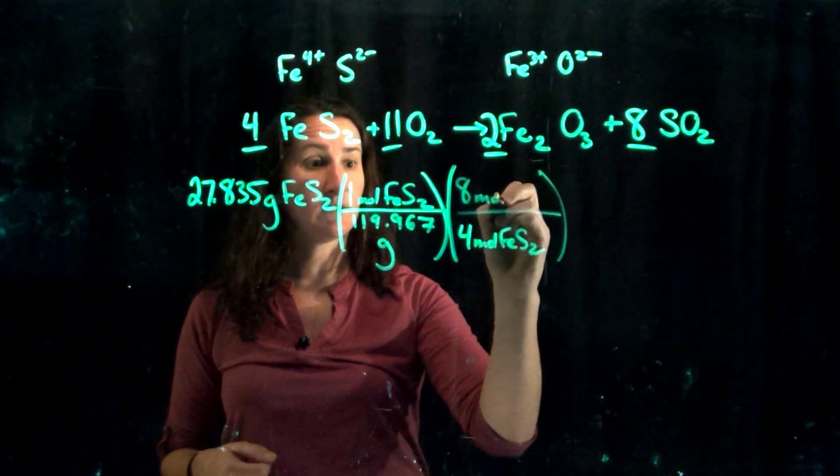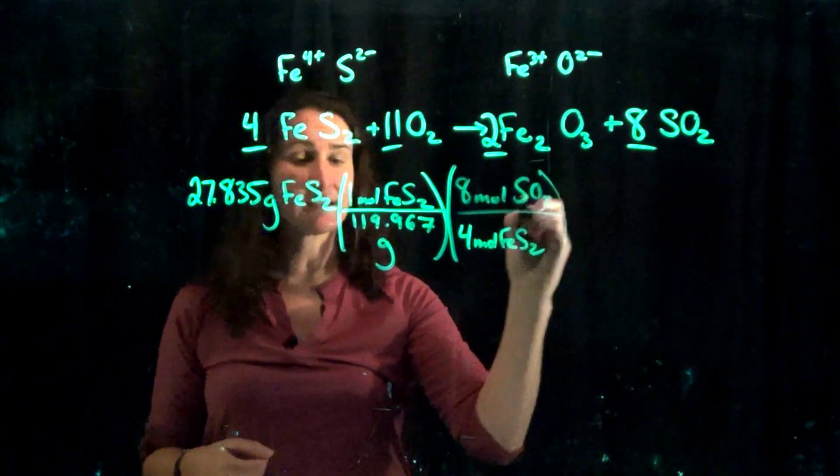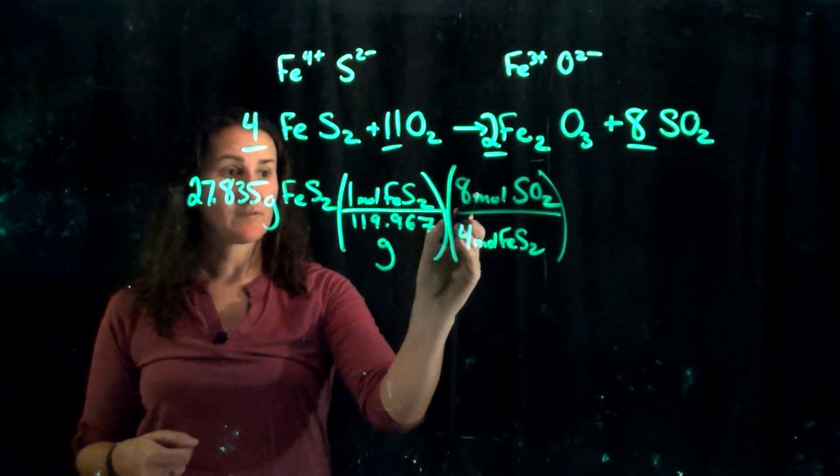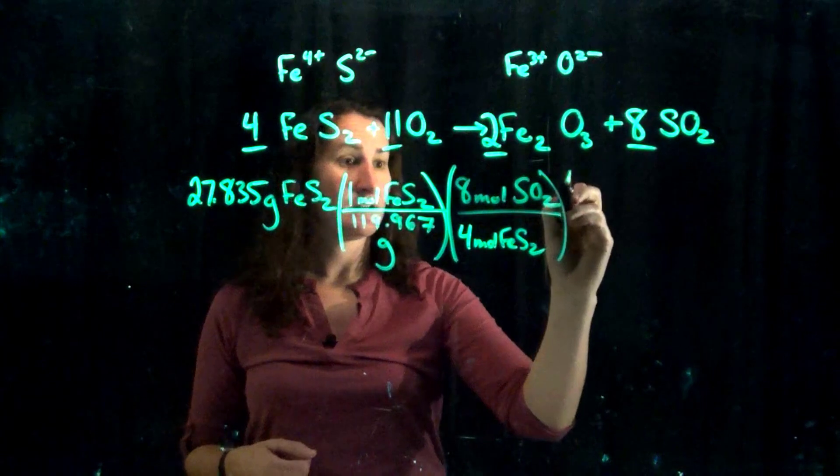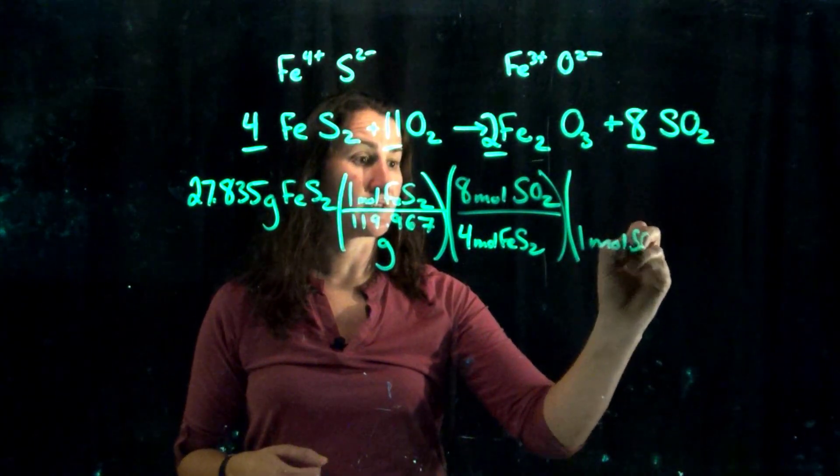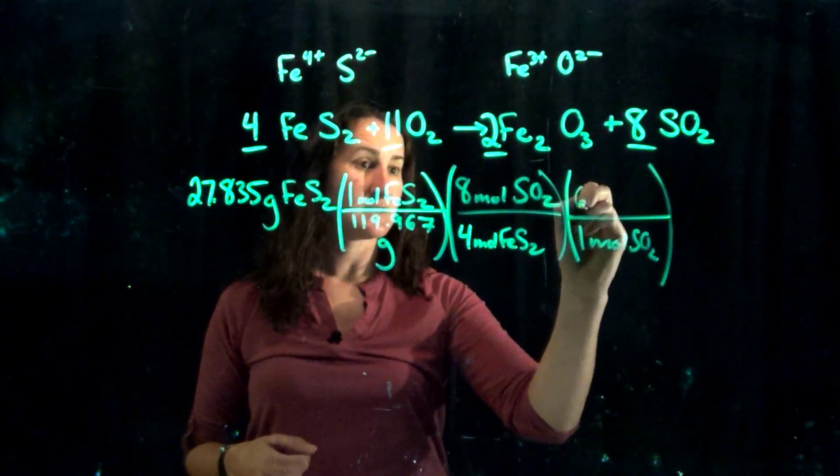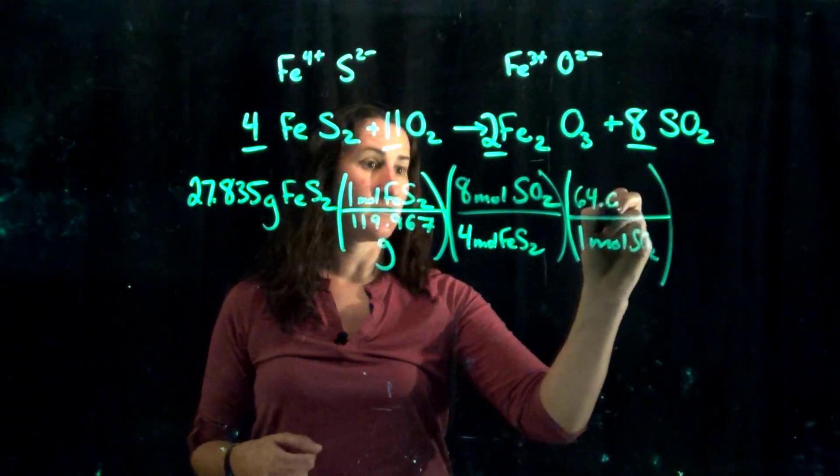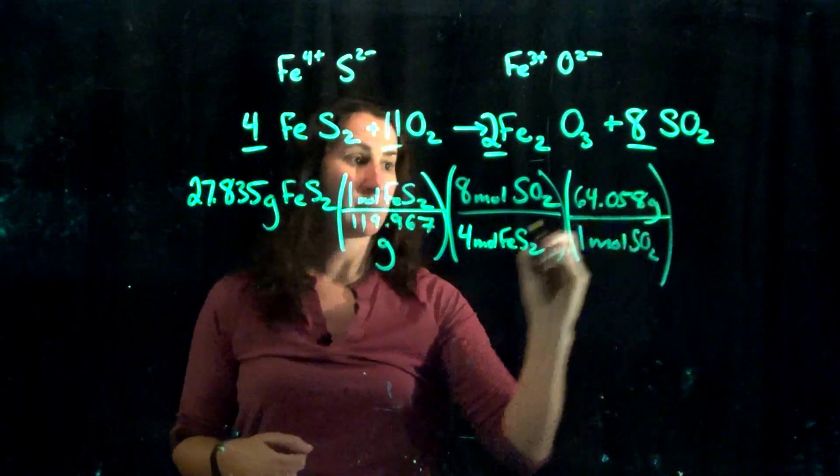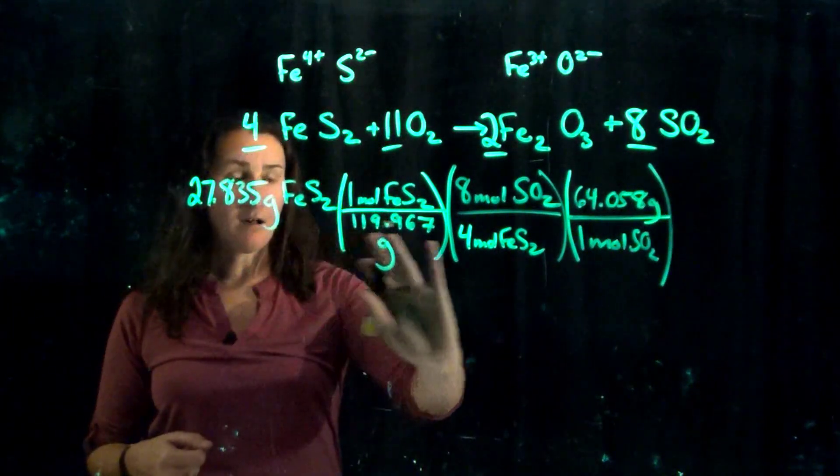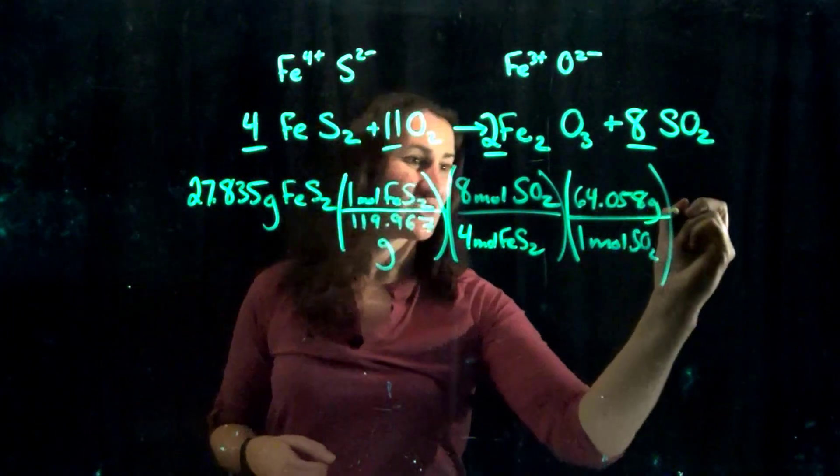Next step, let's convert moles to grams. So one mole of sulfur dioxide is equal to 64.058 grams. Plug all of that into your calculator now and you should get 29.726 grams of SO2.